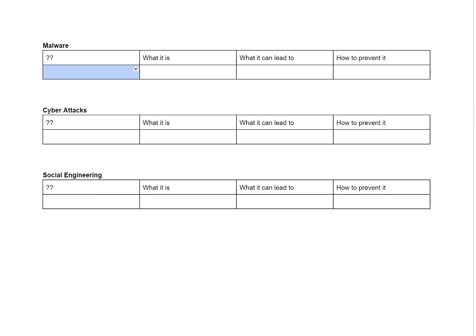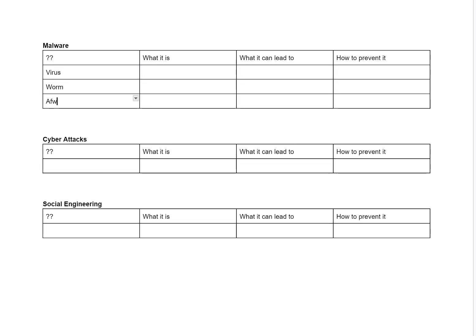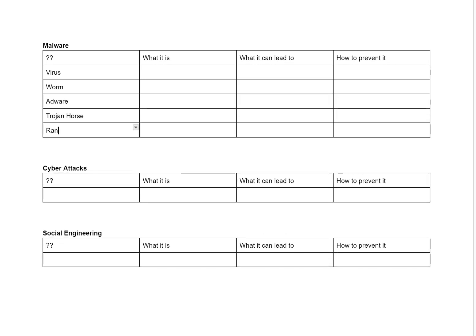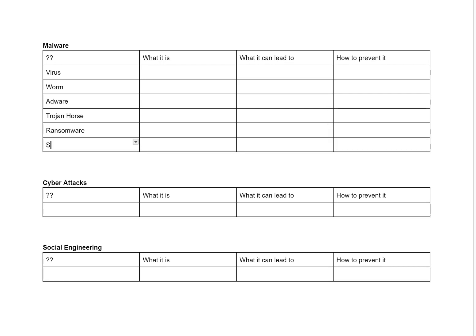So let's do this as different columns. We're going to do: virus, worm, adware, Trojan horse, ransomware, spyware. Those would be my malware.